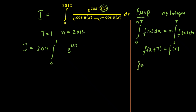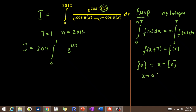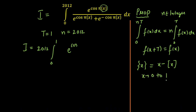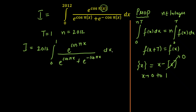Instead of writing fractional part of x, I can see that fractional part of x equals x minus the greatest integer function of x — that's how we define fractional part. When you integrate from 0 to 1, x is varying from 0 to 1, so the greatest integer part will be 0. So fractional part of x from 0 to 1 equals x. I can replace this with cos(πx) in the numerator, and the denominator becomes e raised to power cos(πx) plus e raised to power minus cos(πx), dx.